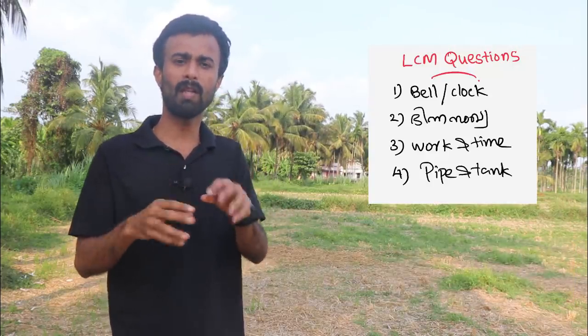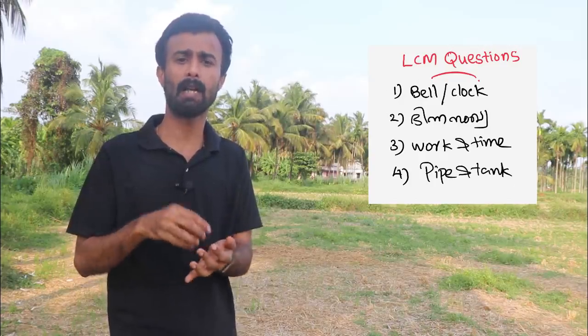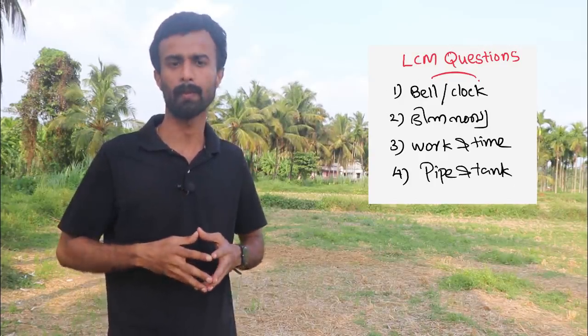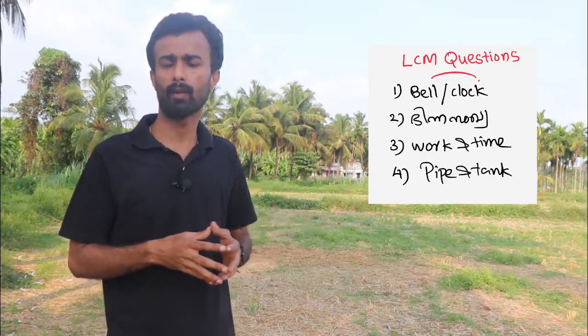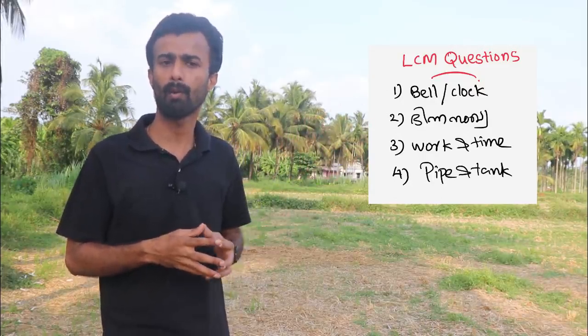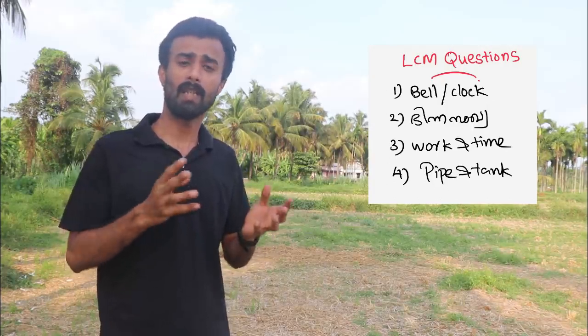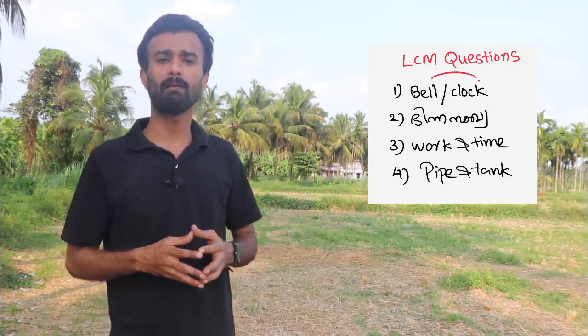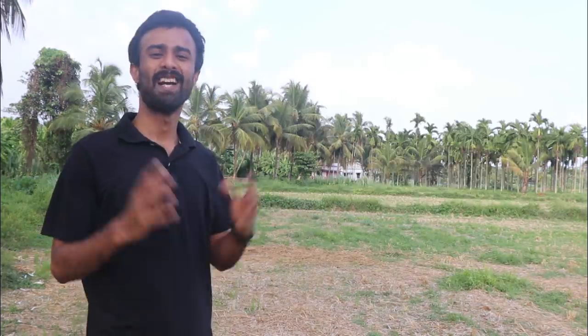We have about 10, 20, 30 — three numbers. There are many types of questions. For example, we need to convert these numbers. We need LCM for work and time, and pipe and tank. We need LCM.